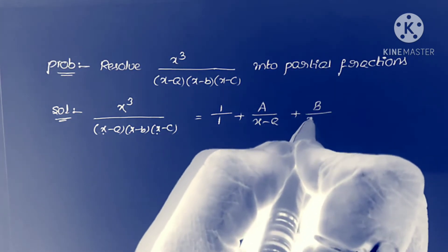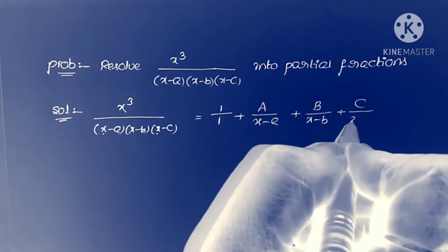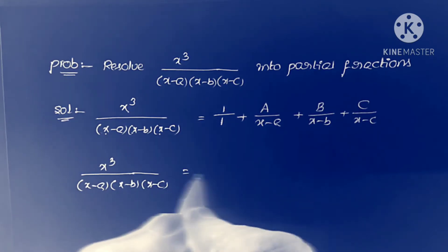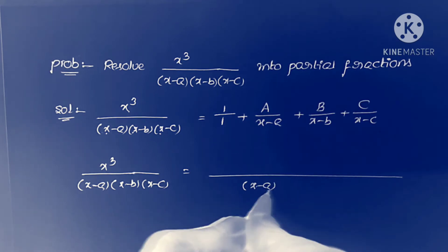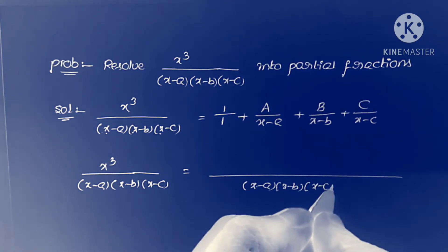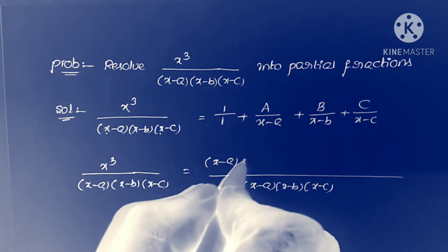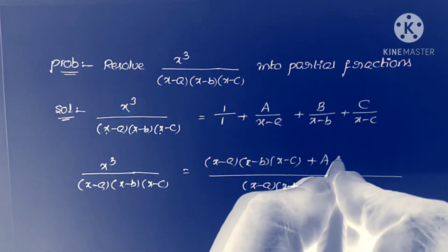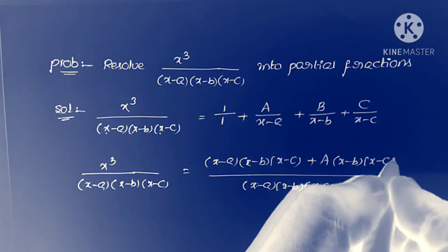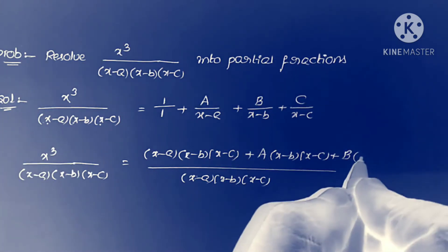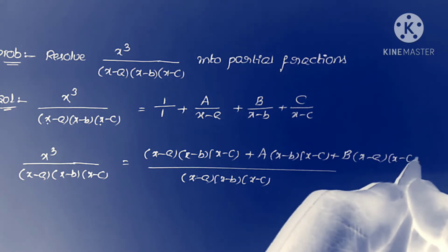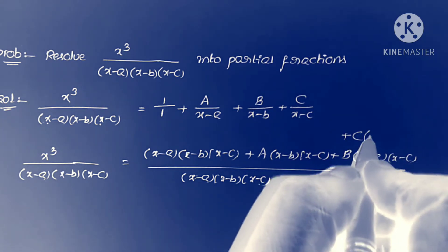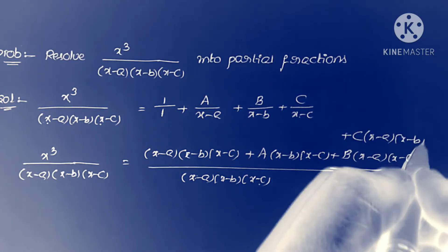We write the partial fractions as A/(x-a) + B/(x-b) + C/(x-c). That is, x³ / [(x-a)(x-b)(x-c)] equals, taking LCM as (x-a)(x-b)(x-c): the first term is A·(x-b)(x-c), since (x-a) cancels; plus B·(x-a)(x-c), since (x-b) cancels; plus C·(x-a)(x-b), since (x-c) cancels.